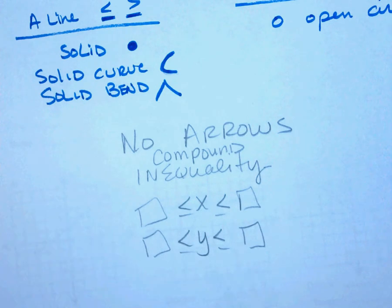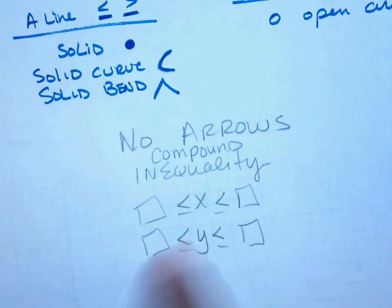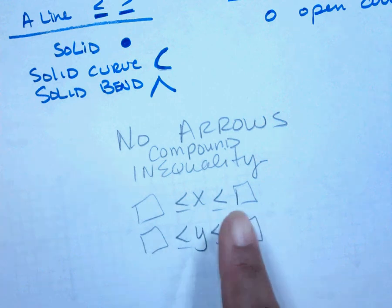I'm using two numbers. There are no arrows. I have a start and an end. This is a compound inequality. Two inequalities put into one.